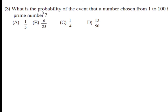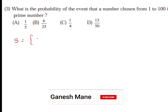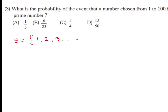Next question: what is the probability that a number chosen from 1 to 100 is a prime number? Four options are given. First we write the sample space S: all numbers from 1 to 100, so N(S) = 100. We define event A as the chosen number being a prime number, and collect all prime numbers between 1 and 100.